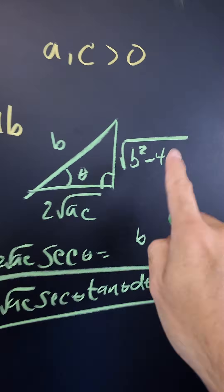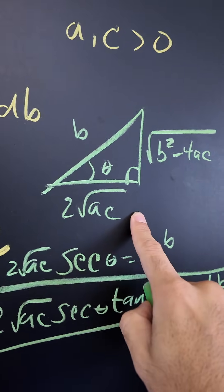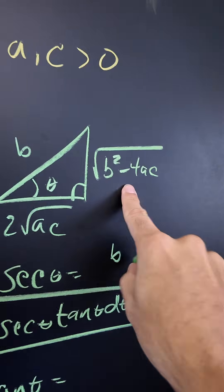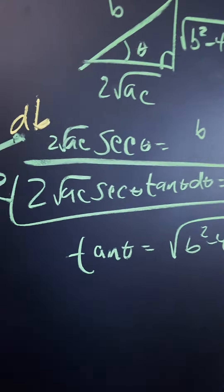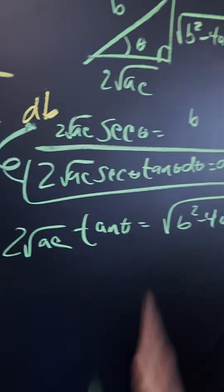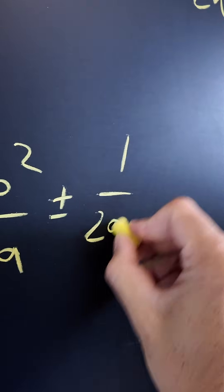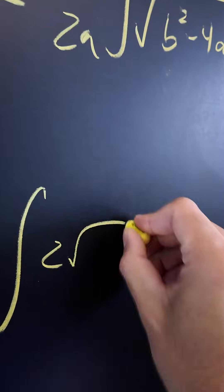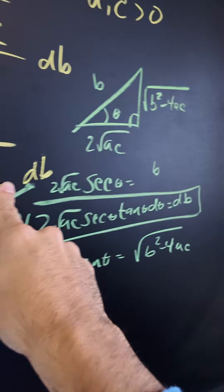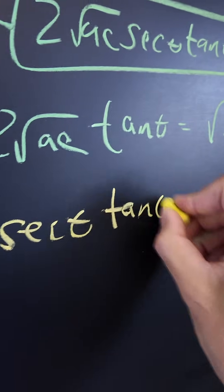We need an expression for root B squared minus 4AC. That's tangent, since tangent of theta equals the opposite over the adjacent: root B squared minus 4AC over 2 root AC, so root B squared minus 4AC equals 2 root AC · tan theta. Now let's rewrite our integral. We have negative B squared over 4A plus or minus 1 over 2A times the integral of 2 root AC · tan theta times 2 root AC · secant theta · tan theta · dθ.